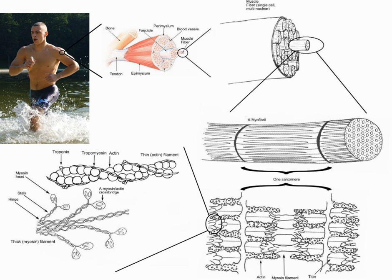The three types of muscle have significant differences. However, all three use the movement of actin against myosin to create contraction. In skeletal muscle, contraction is stimulated by electrical impulses transmitted by the nerves, the motor neurons in particular. Cardiac and smooth muscle contractions are stimulated by internal pacemaker cells which regularly contract and propagate contractions to other muscle cells they are in contact with. All skeletal muscle and many smooth muscle contractions are facilitated by the neurotransmitter acetylcholine.